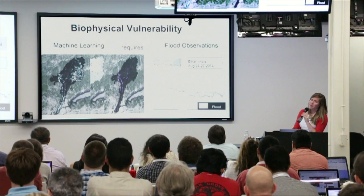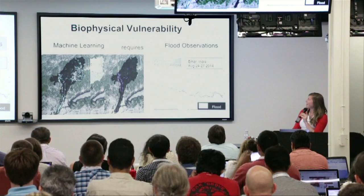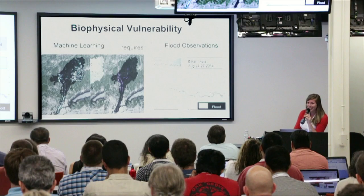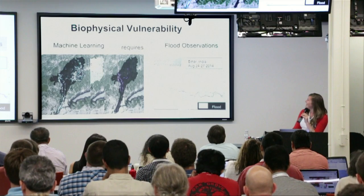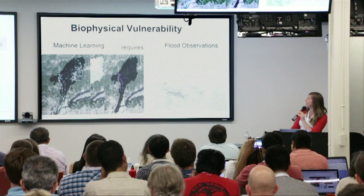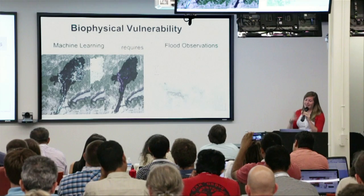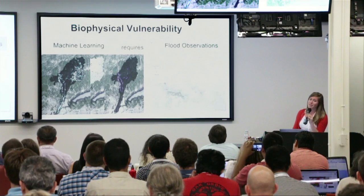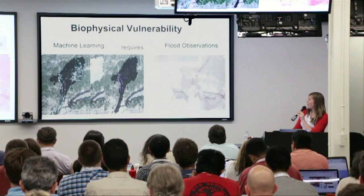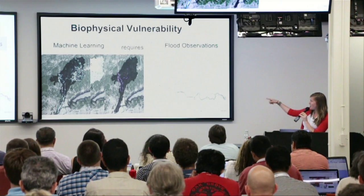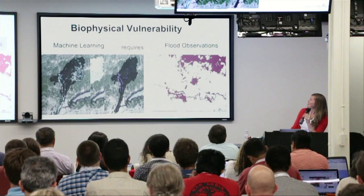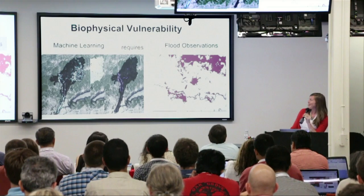We were originally going to use the Dartmouth Flood Observatory data for this, but the data's a little messy, and they suggested we just do it ourselves in Earth Engine from MODIS data. So if you take a MODIS tile, you can look at three days and six MODIS images, apply some simple band thresholding using the same metrics they use, and we've been able to reproduce their flood observations — shown here in pink — while ours are in red. We're still working on removing some clouds, but we think we'll be able to do it.